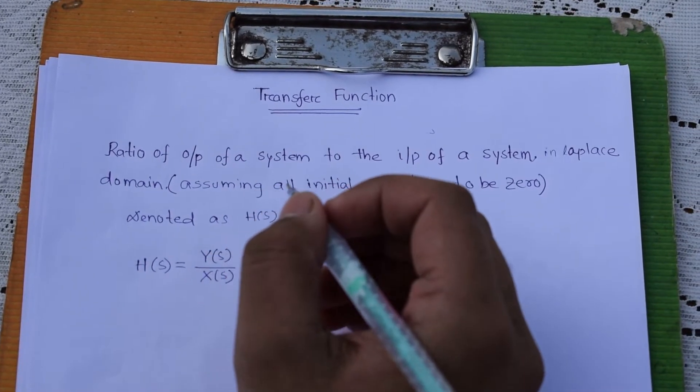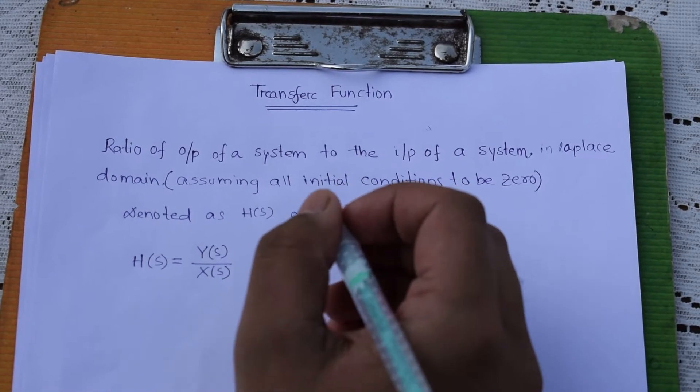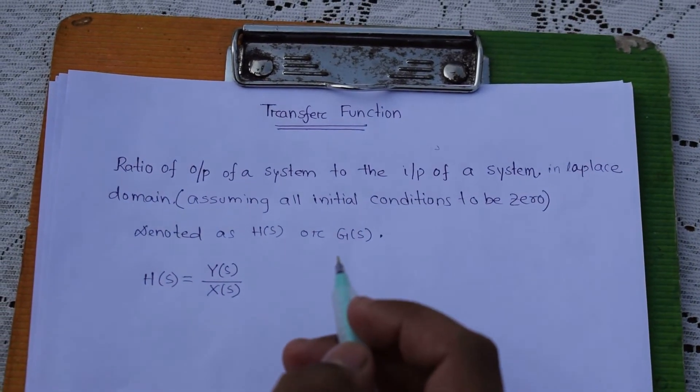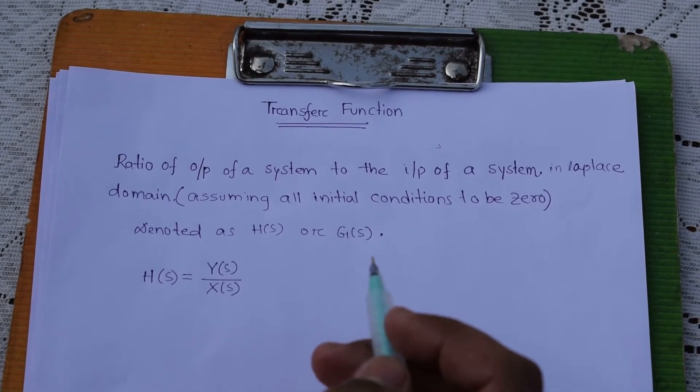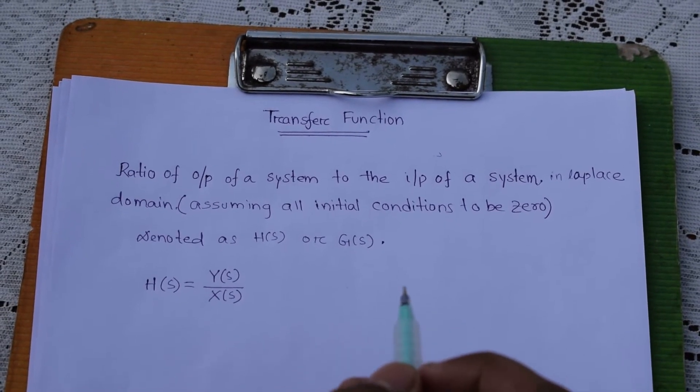Hi friends, today we'll discuss transfer function. When it comes to control systems, the first thing we come across is transfer function. So what basically a transfer function is: in simple words we can say that it's the ratio of output of a system to the input of a system.